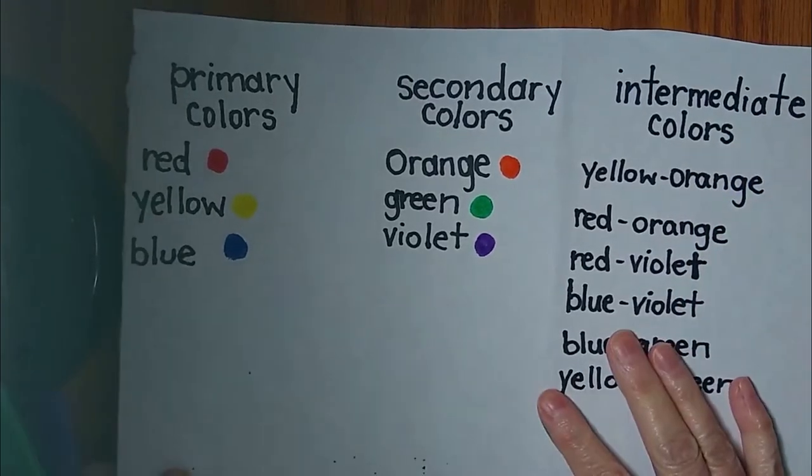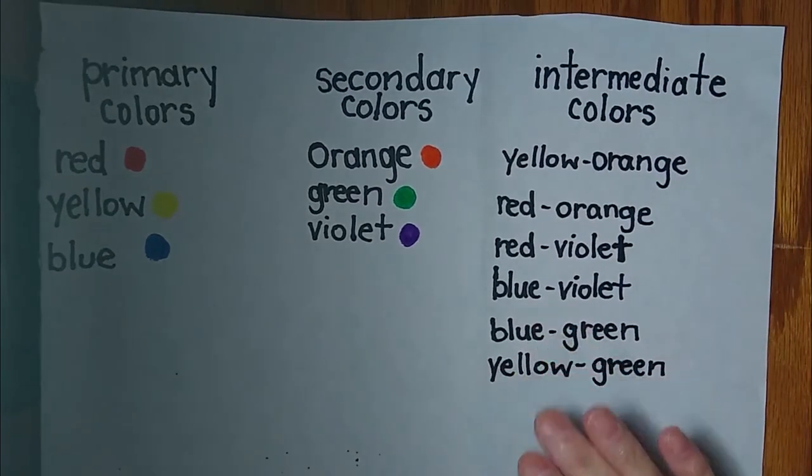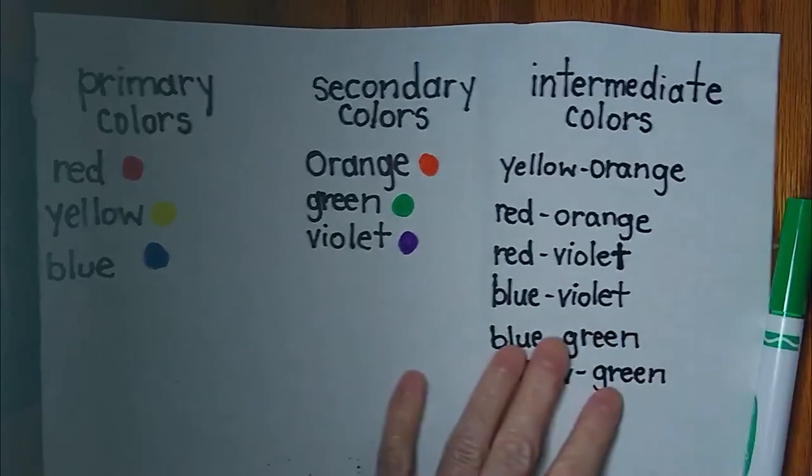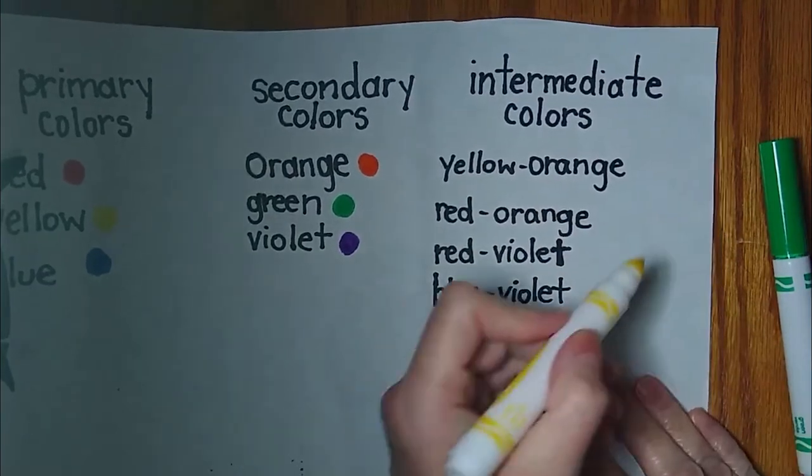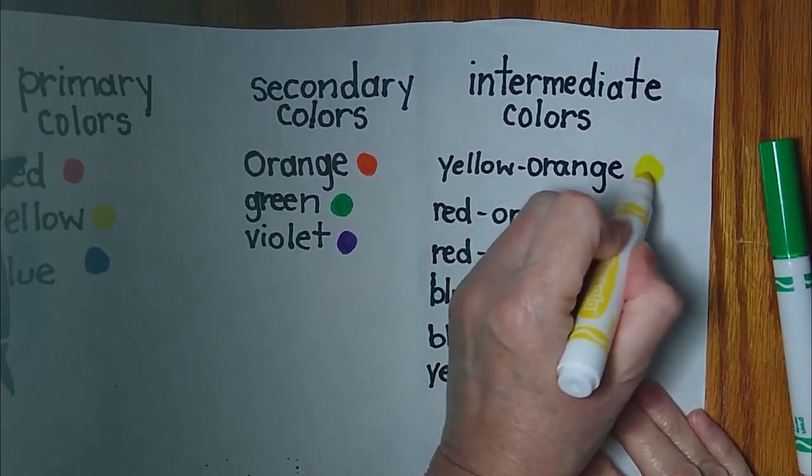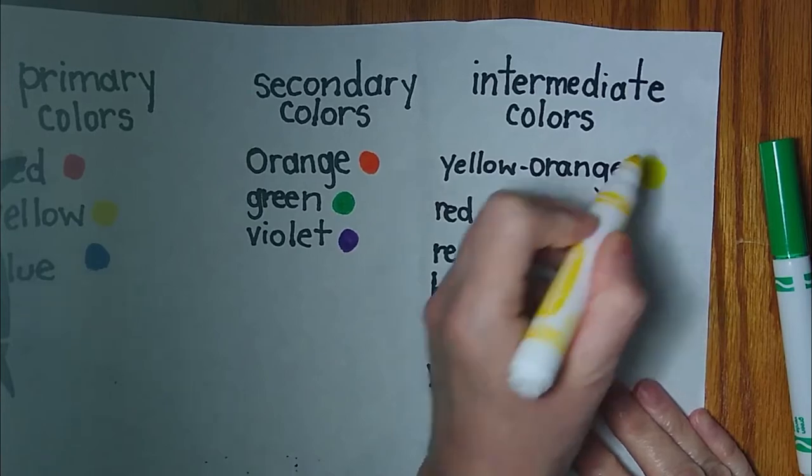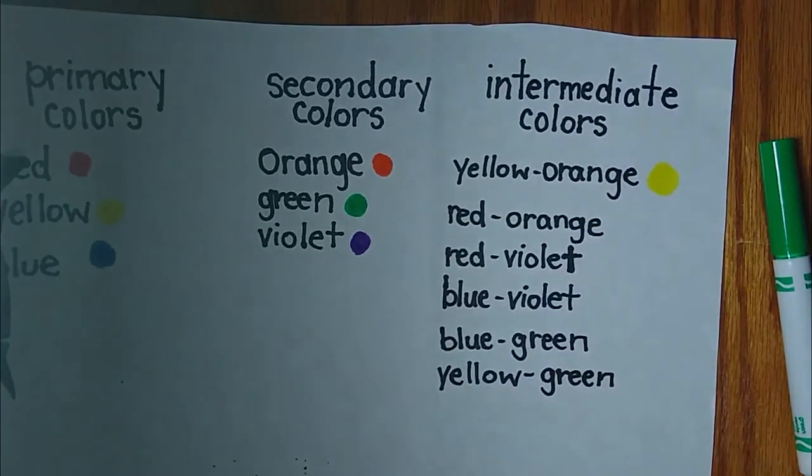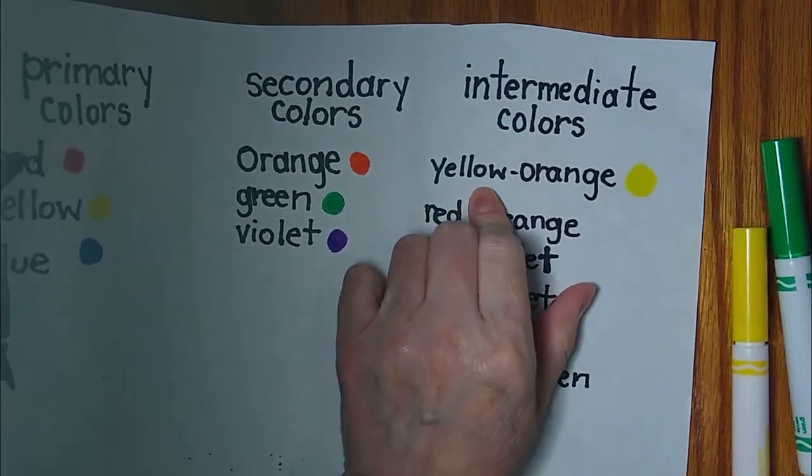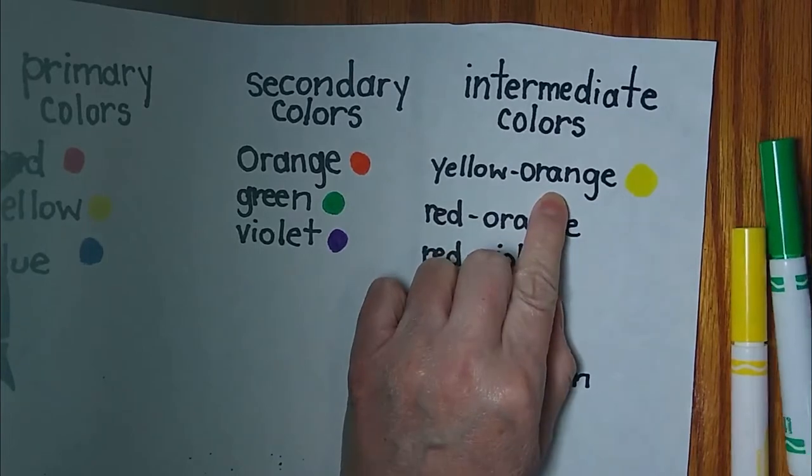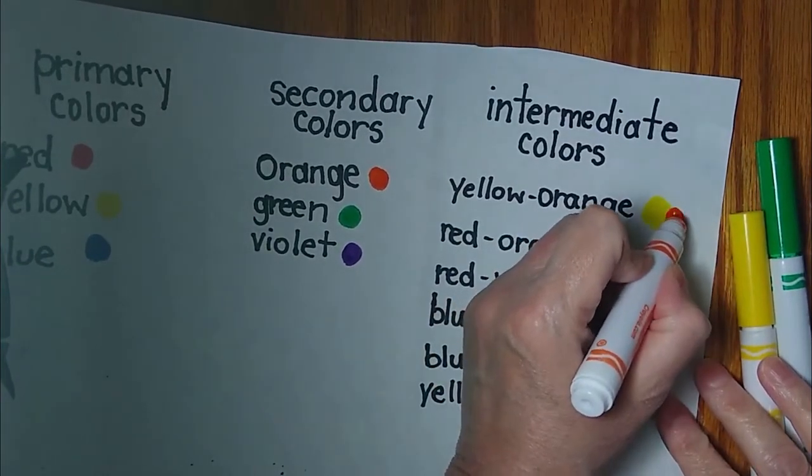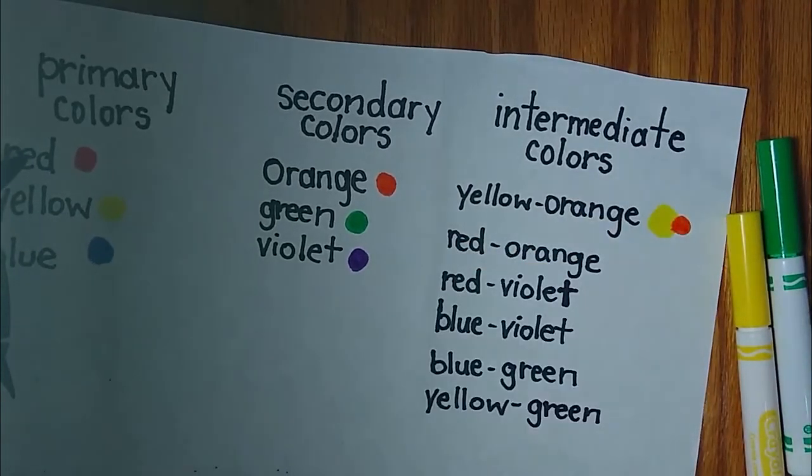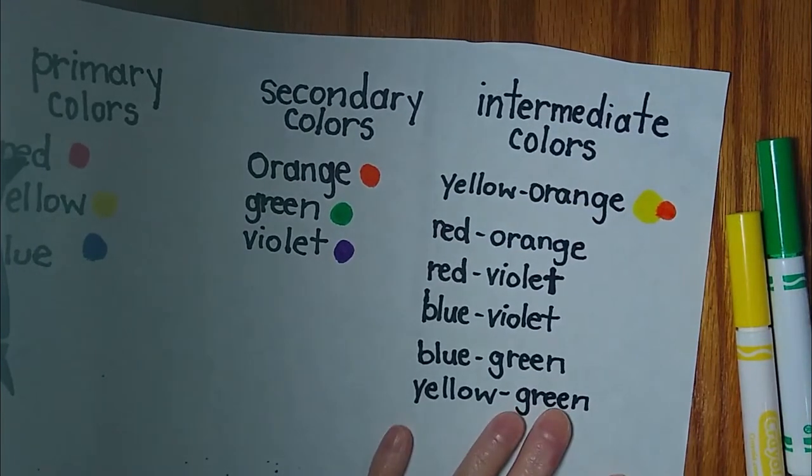Now let's practice making our intermediate colors. We start off with yellow. It says yellow-orange and I'm going to put a lot of yellow because when you make yellow-orange you need more of the first color than you do the second color. So I'll put just a little bit of orange beside it. Next we need a lot of red with a little bit of orange.